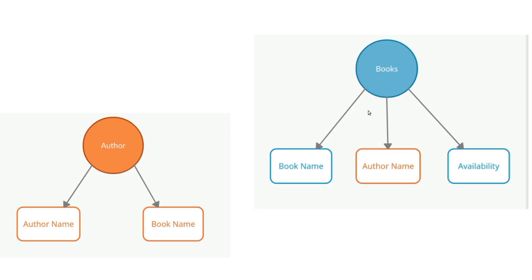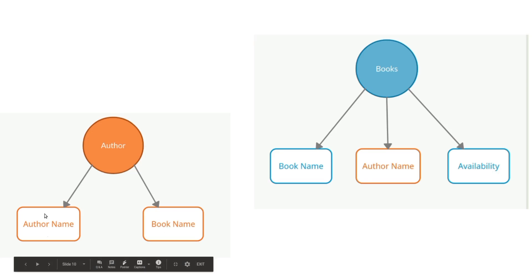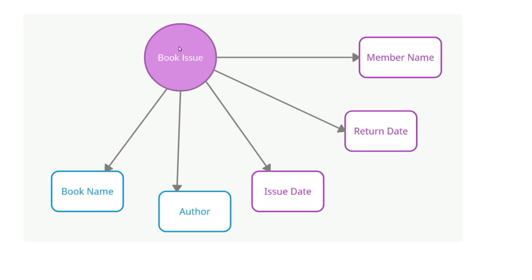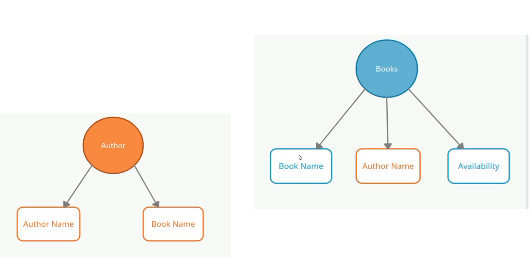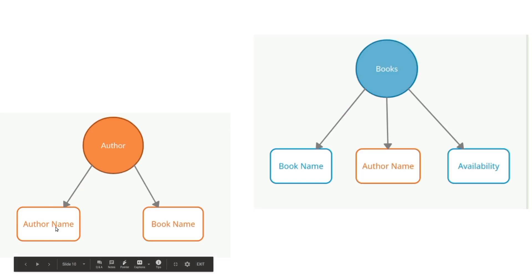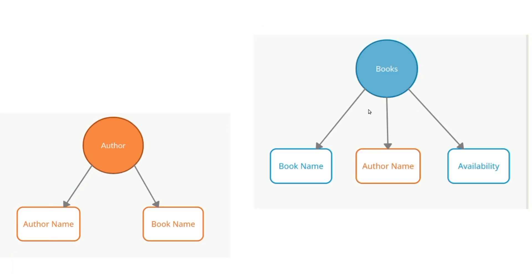The Books doc type will have fields like book name, author name, and availability. The Author doc type will have author name and book name. The Book Issue doc type will have book name, author, issue date, return date, and member name. Issue date and return date are of data type Date. Book name is linked to the Books doc type, and author name is linked to the Author doc type — showing how doc types are linked together.